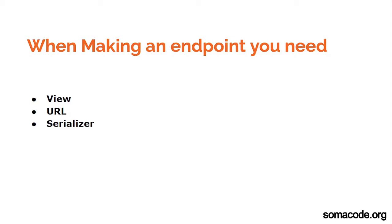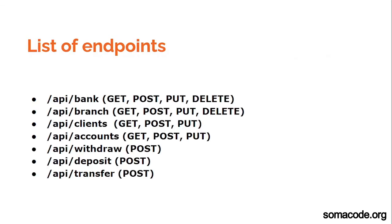The common HTTP methods you are going to use are GET, POST, DELETE, and PUT. You must define the business logic in your view and also define the HTTP method you are going to use. Your endpoint must also have a URL, and lastly you need a serializer — which we already did. So we are going to work with a view, a URL, and a serializer.